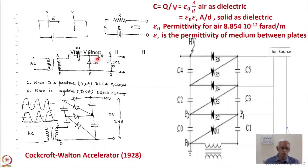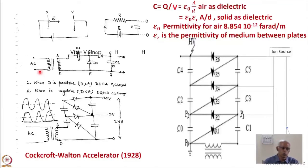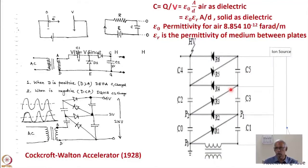What Cockroft and Walton did was, instead of just one unit, they added multiple units. This is one unit of the multiplier — one stage has two capacitors and two diodes. To go to higher voltages, you keep adding stages. Here it is shown in three stages: one, two, three — giving three times the voltage. Each capacitor charges to 2V₀, so three stages gives six times V₀. This is how the Cockroft-Walton multiplier works.